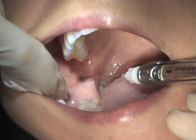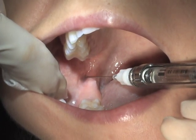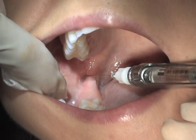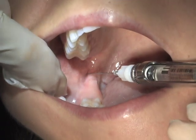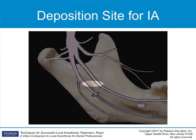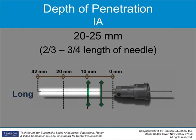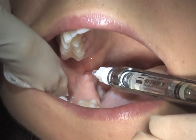As you start inserting, you may notice more resistance with this injection than in previous injections. Continue to advance the needle from the angle of the corner of the mouth until bone is gently contacted. The needle should be slightly above the mandibular foramen at this point. The depth of insertion is approximately 20 to 25 millimeters, or about two-thirds the length of the long needle. Do not deposit unless bone has been gently contacted.